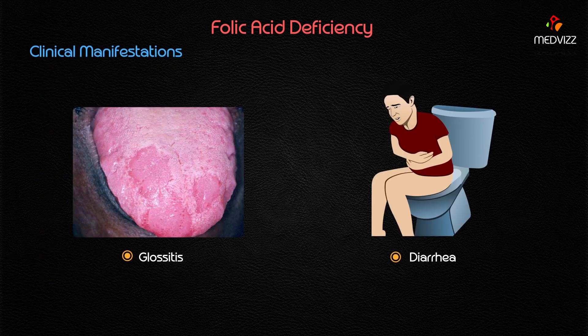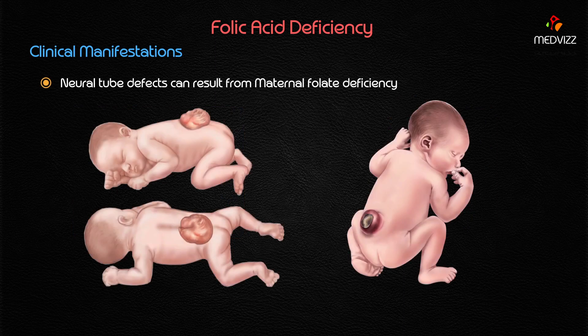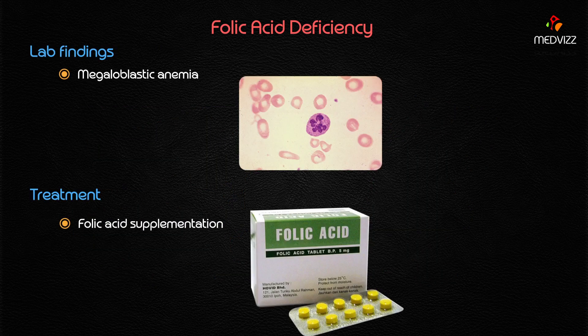The clinical manifestations of folic acid deficiency include glossitis, diarrhea, and notably neural tube defects resulting from maternal folate deficiency. Lab findings show megaloblastic anemia with hypersegmented neutrophils on the peripheral blood smear. Importantly, there are no neurological manifestations — which distinguishes folic acid deficiency from vitamin B12 deficiency.